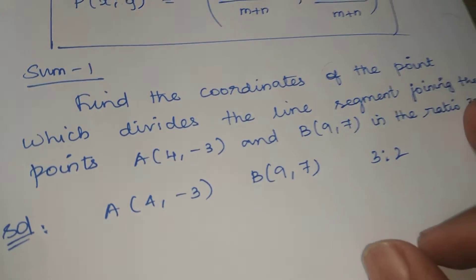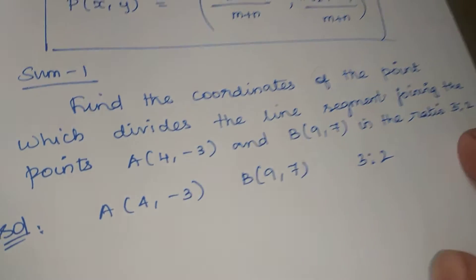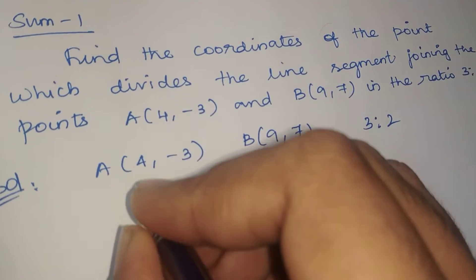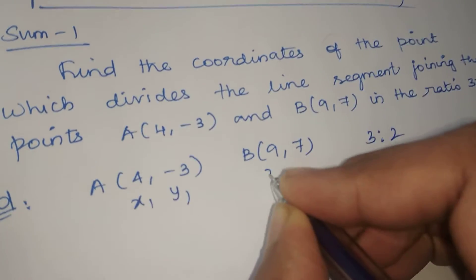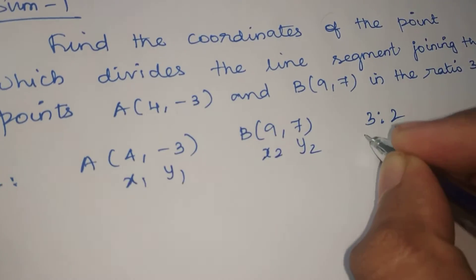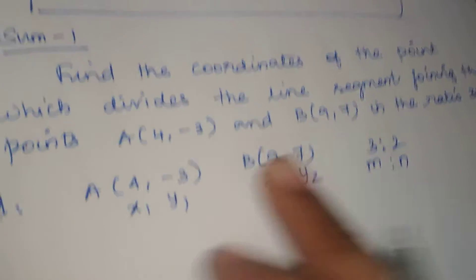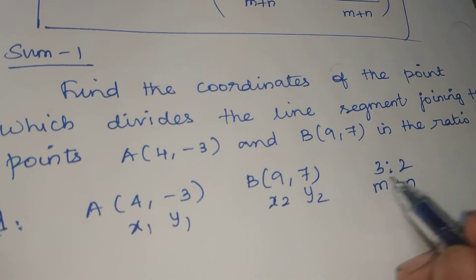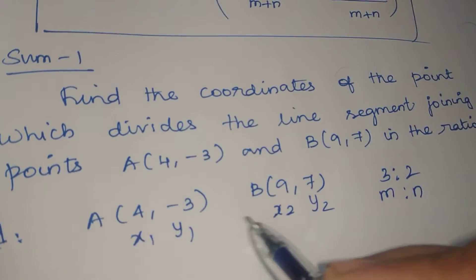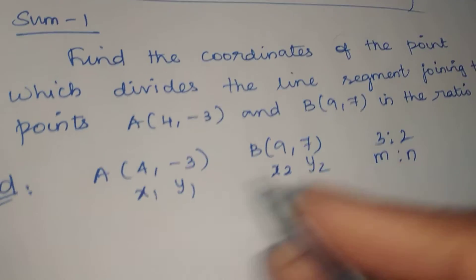The line divides the line segment joining points A and B in the ratio 3:2. So this A is (x1, y1), B is (x2, y2), this is m, this is n. This is the main point of the ratio m:n. So A is (x1, y1) which is (4, -3), and B is (x2, y2) which is (9, 7). Now, the section formula is known.